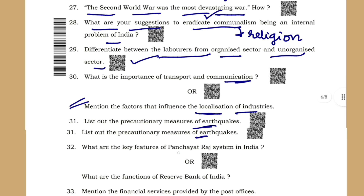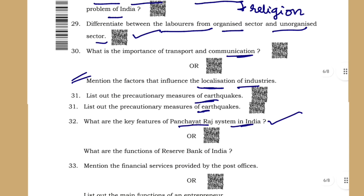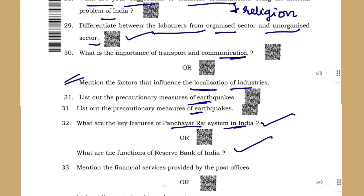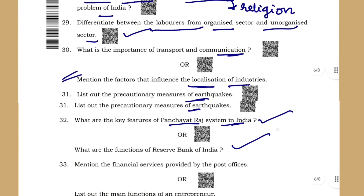What are the key features of the Panchayat Raj system in India — very important. Functions of RBI. Then mention the financial services provided by the post office or bank. Then list the functions of an entrepreneur. These are very, very important questions.